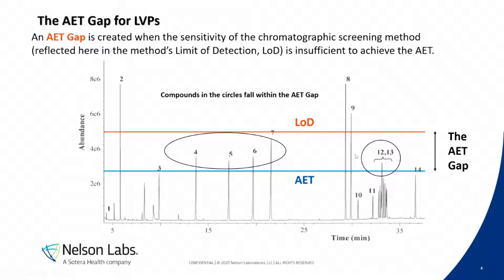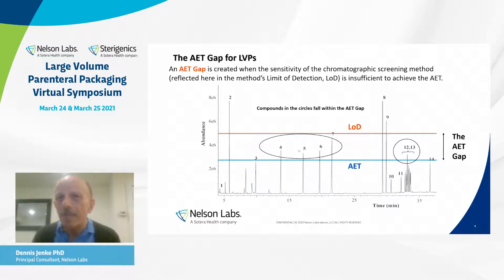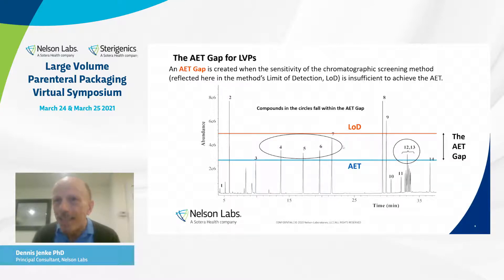That means there is the potential that there'll be peaks in the chromatogram that fall within that region — the AET gap region — where the analytical method just can't get down. I know this picture is distorted a little bit for illustration purposes, but it illustrates the fact that there could be peaks that fall in that gap.